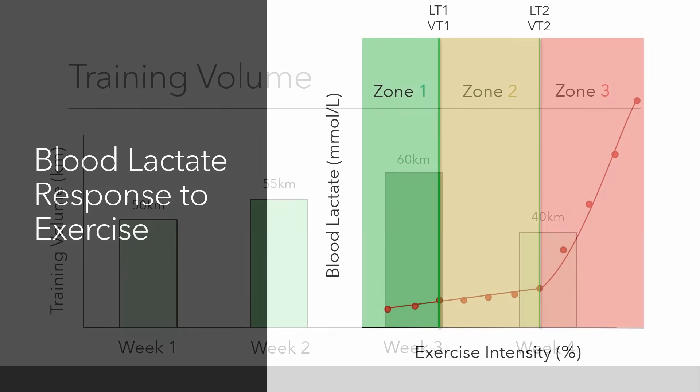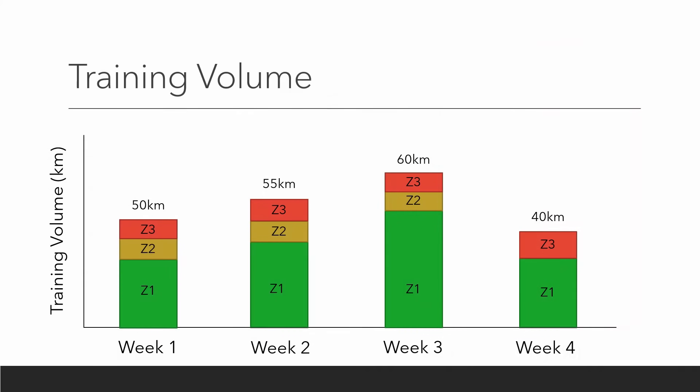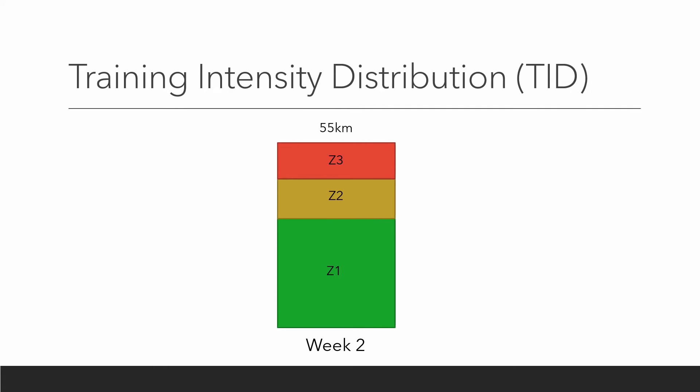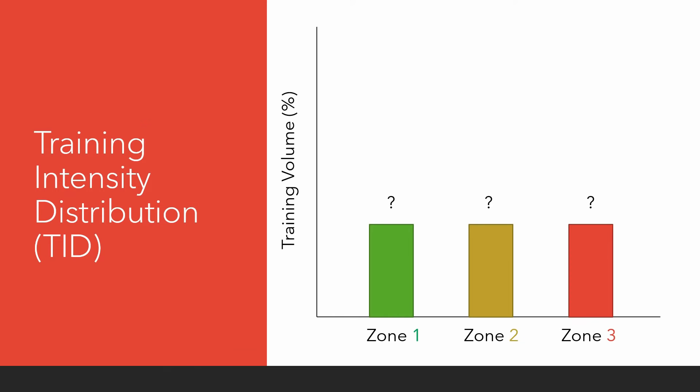If we recall the training intensity zones, we can split our weekly training volume into segments which tell us how much of our training was done in each of the 3 zones — Z1, Z2, and so on. If we take a look at week 2, we can see that 55km of training was done. Of this 55km, the majority was done in zone 1, with smaller amounts of training done in zones 2 and 3. The fundamental question you may ask yourself is: how much training should I do in zones 1, 2 and 3 for best endurance results? This would be called training intensity distribution, or TID.